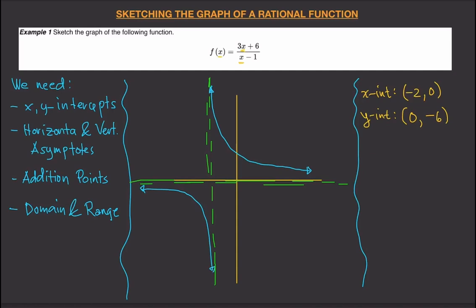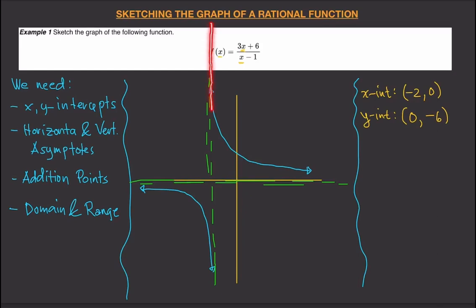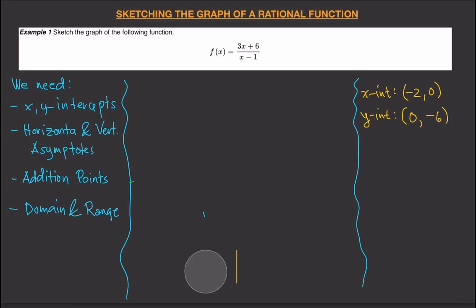For the horizontal asymptote, your graph will approach it but never touch it, meaning the x-value goes to infinity but the y-value approaches a certain number. Similarly, as y goes to infinity, the graph will never reach the asymptote's x-coordinate. That's the idea behind asymptotes, and it's how we solve for them.